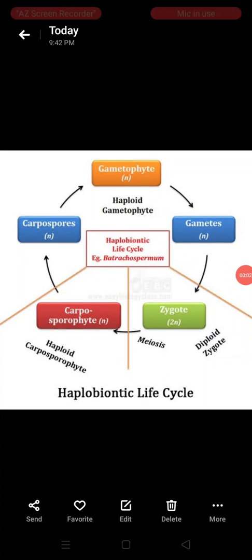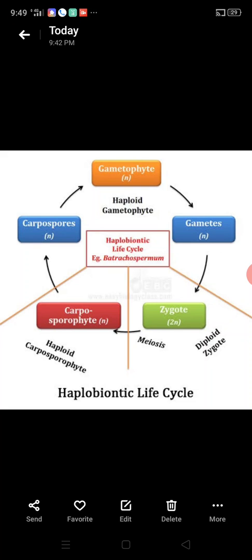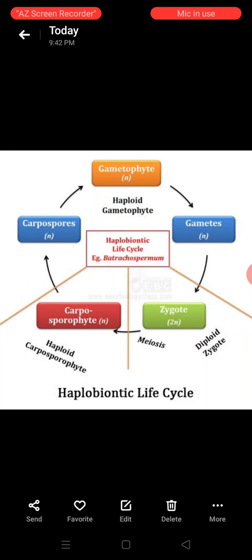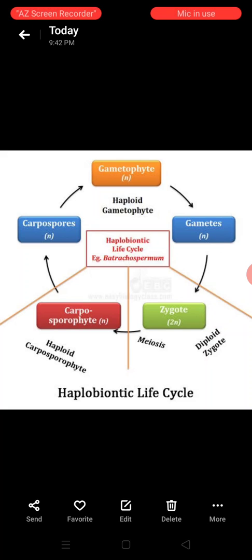Welcome to today's session. In the previous class, we mentioned three different types of life cycles seen in algae: the haplontic life cycle, diplontic life cycle, and diplohaplontic life cycle. Today we'll see the next type of life cycle, that is the haplobiontic life cycle.